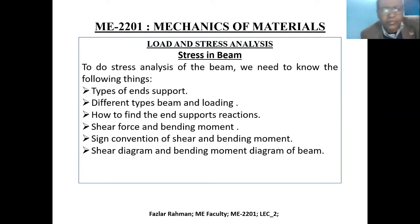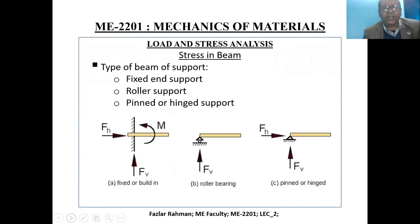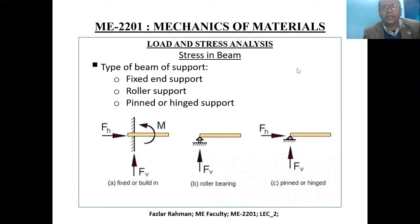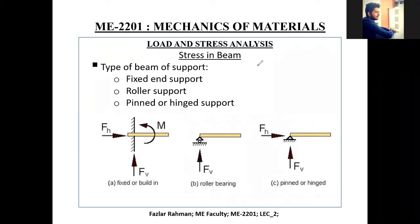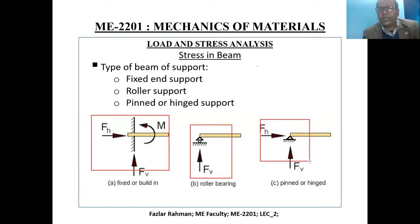Now we need to know the classification of beams. First, the types of support. You already know these from engineering mechanics. Figure A shows a fixed support, which has two reaction forces and a bending moment. The roller bearing has only one reaction, and the pin support has two reaction components.